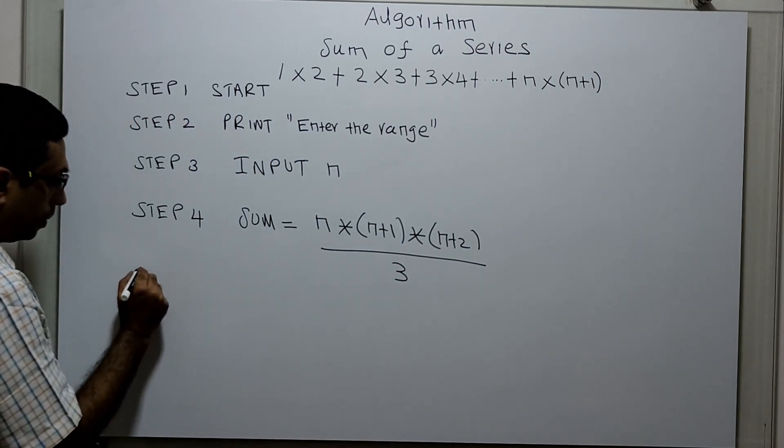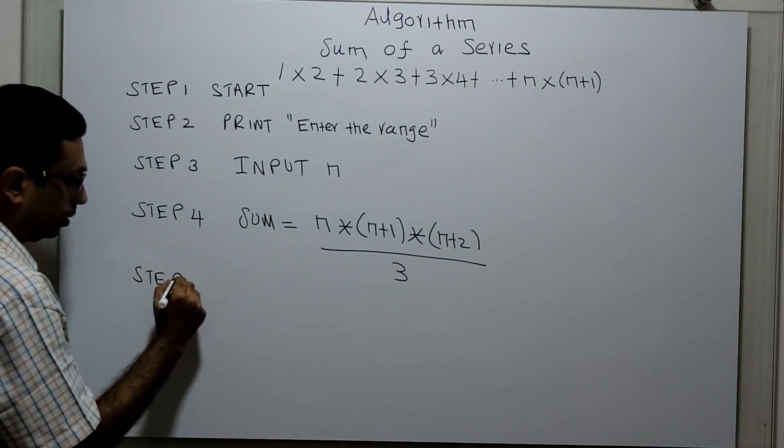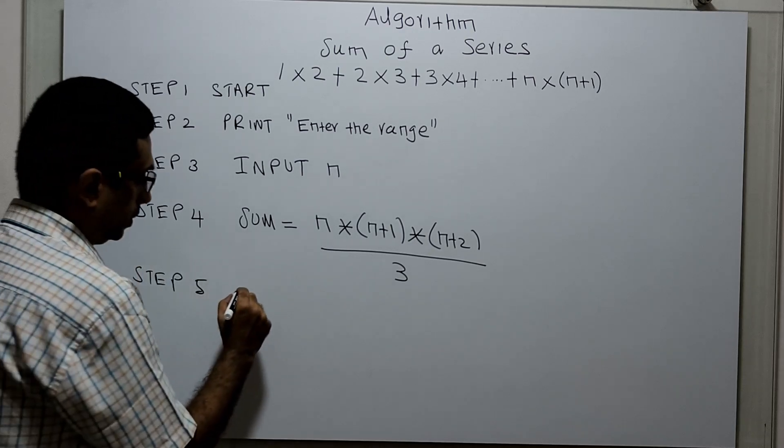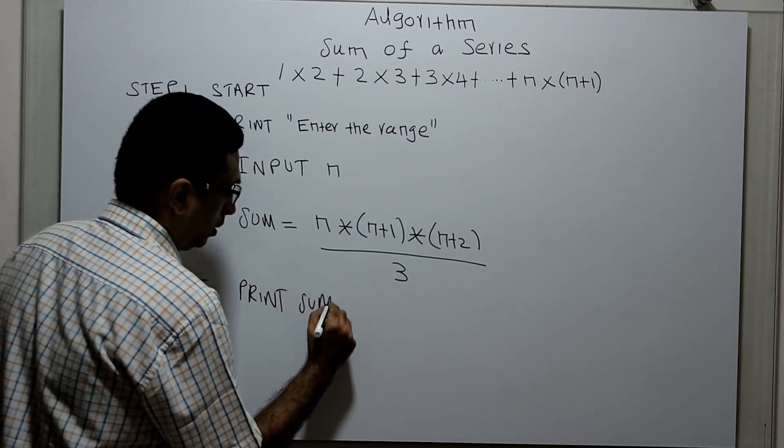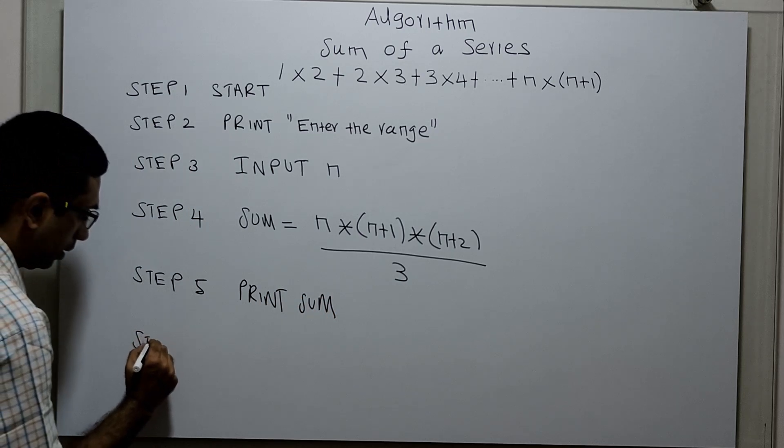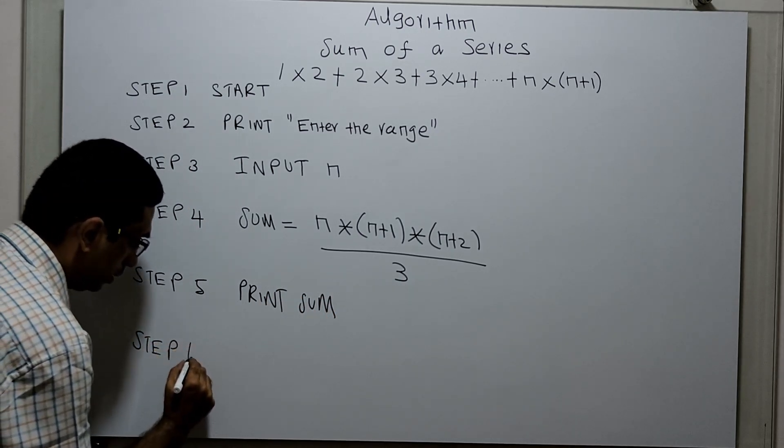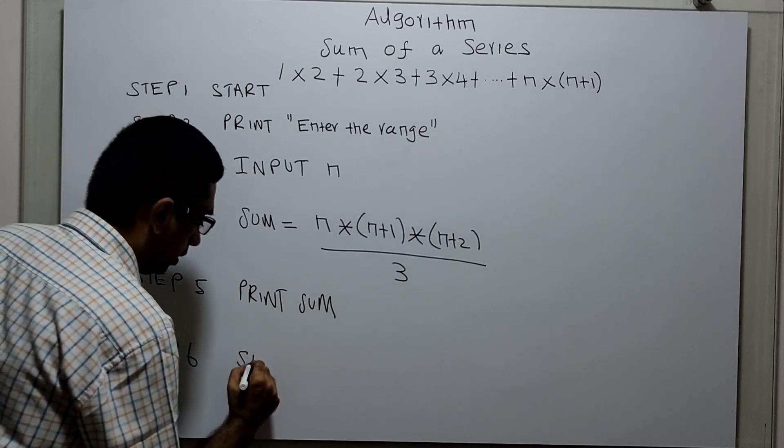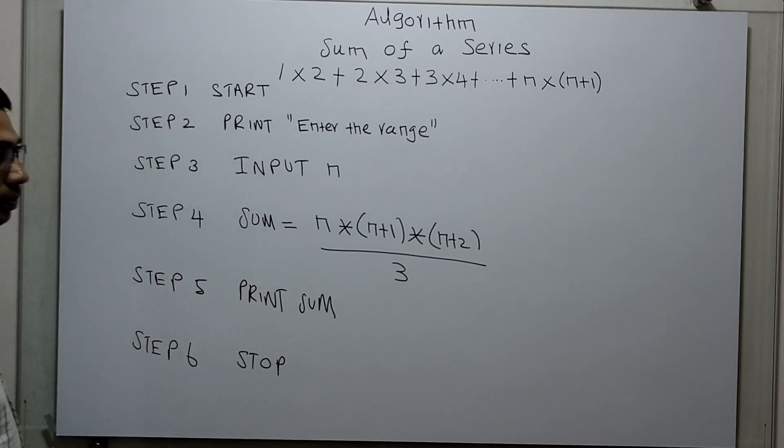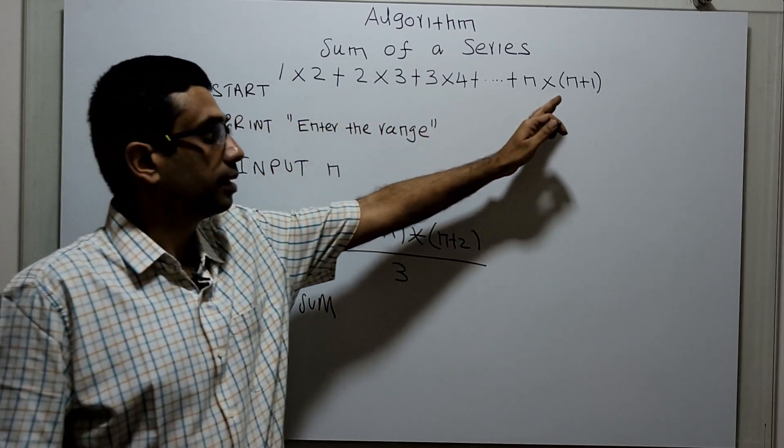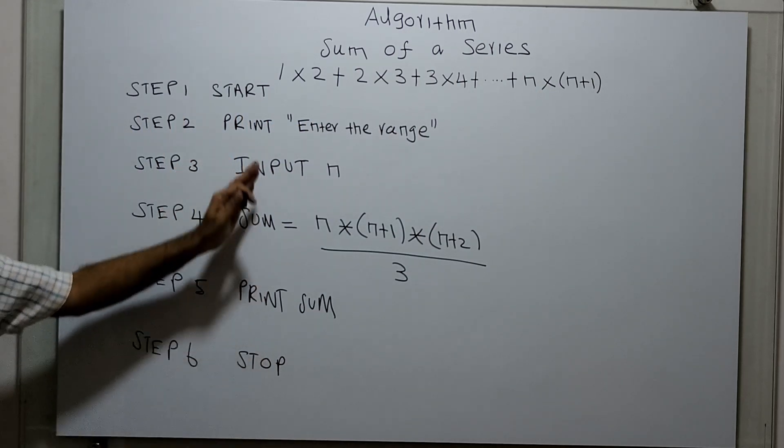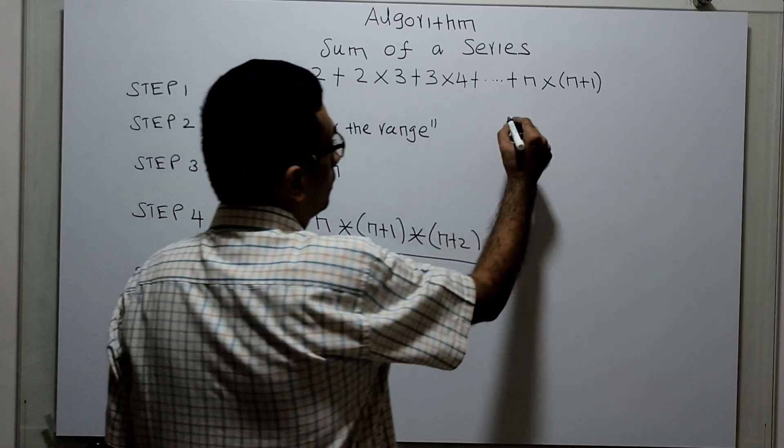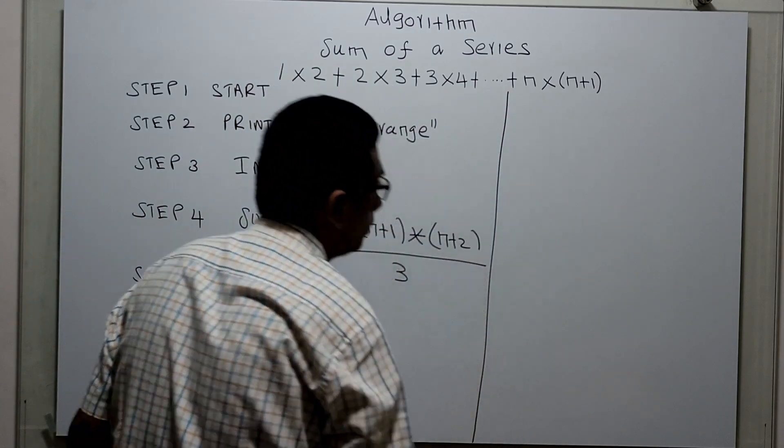After calculating the sum, I am printing the result. Step 5: Print sum. Step 6 is the logical end of the algorithm. This is the algorithm to calculate the sum of the series. We will take a sample input and check the algorithm is working properly.